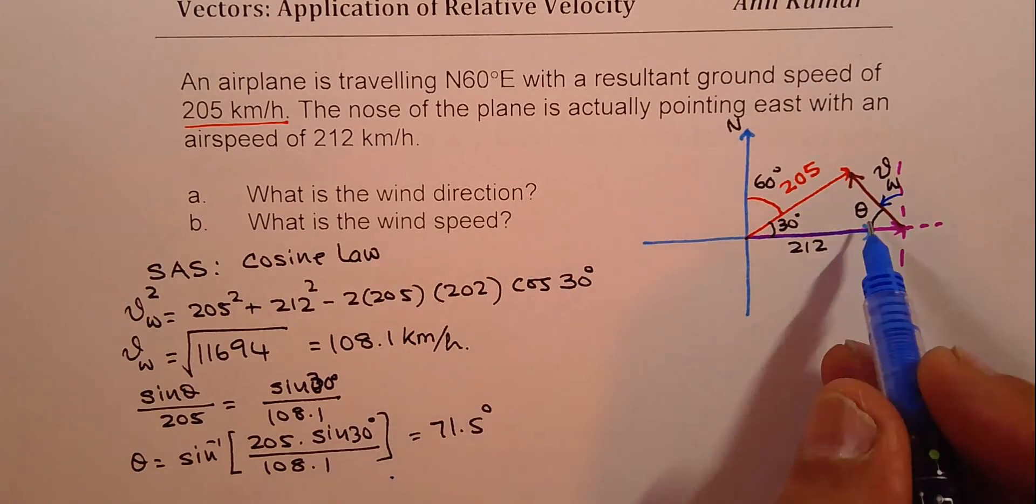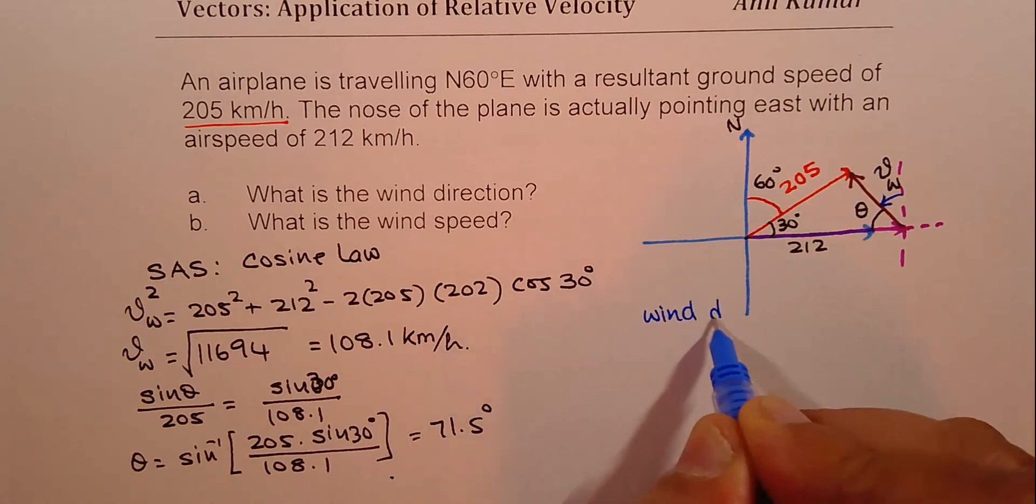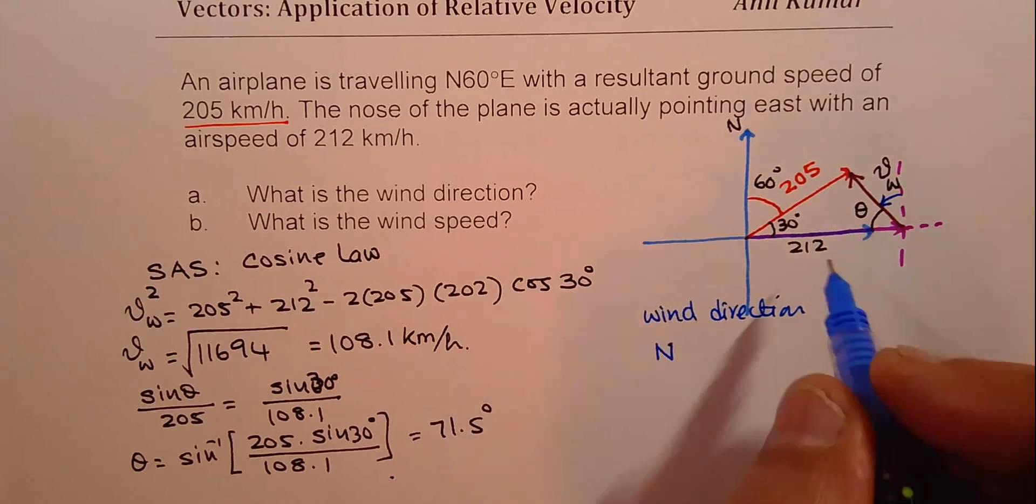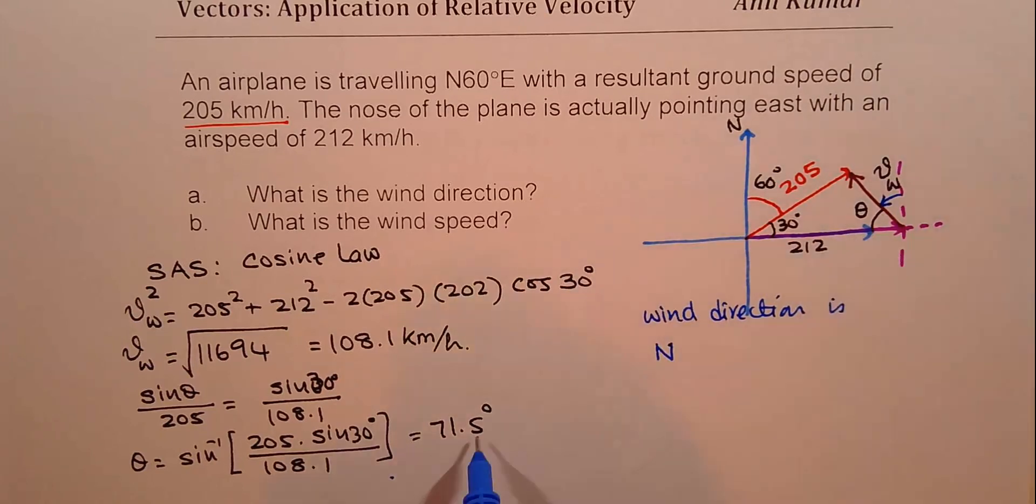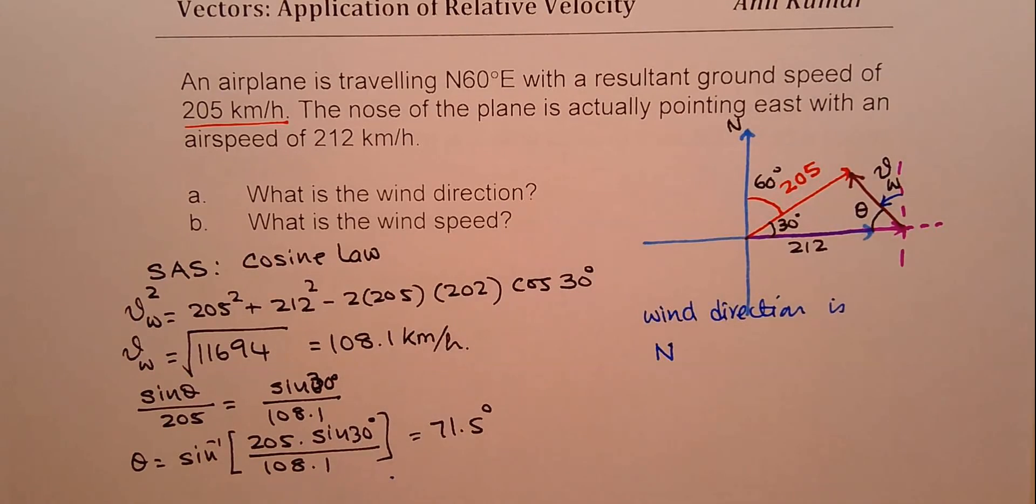So this could be, so we can say wind velocity or wind direction is from north. We have 71.5 here. So that one, which we calculated was 18.5, 18.5 degrees west.